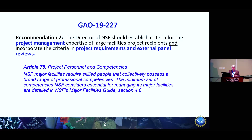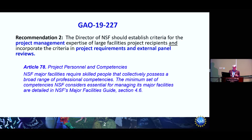How we implemented the project requirement — incorporating the criteria into project requirements — is this term and condition in your cooperative agreements. This is just major facilities now. So if you're in mid-scale, you probably don't see Article 78. It's a very soft requirement intentionally — it's a pointer to the RIG. It says, 'Hey, this is what we expect.' At the time we didn't know it would be section 4.6.6; we just knew it would be under section 4.6. It's a pointer — this is our expectation of how you're going to do your team.